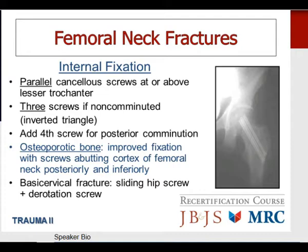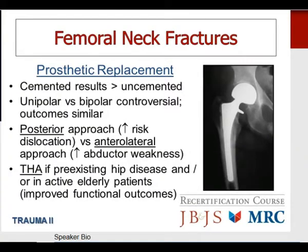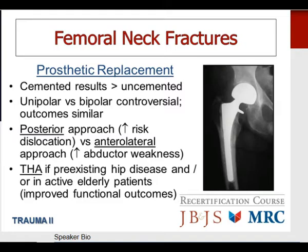For prosthetic replacement of femoral neck fractures, the literature clearly supports that cemented hemiarthroplasty results are superior to uncemented. The issue of unipolar versus bipolar hemiarthroplasty remains controversial — the literature does not support any advantage to bipolar implants; outcomes are essentially similar. Hemiarthroplasty can be performed through a posterior or anterolateral approach. The posterior approach carries increased risk of prosthetic dislocation, while the anterolateral approach carries significant risk of abductor weakness. Total hip arthroplasty versus hemiarthroplasty has been associated with significantly improved long-term functional outcomes in active elderly patients with pre-existing hip disease.